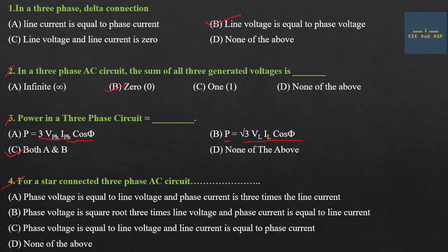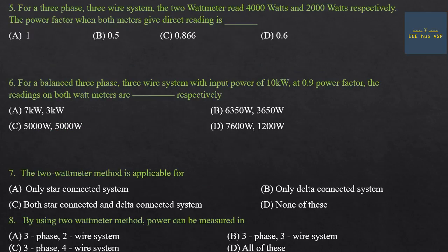Fourth question: For a star-connected 3-phase AC circuit, the phase current equals line current. That is the answer.